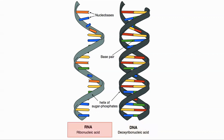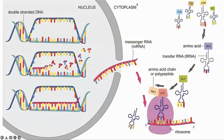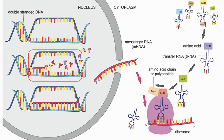RNA is very similar to single-stranded DNA, although there is a change in one of the bases. At a high level, here is the process known as transcription by which the blueprint in the DNA is converted into a protein. DNA strands separate so that the base pairs can be accessed. RNA is assembled with the bases of the RNA matching their paired base on the DNA until a complete RNA is created.